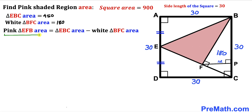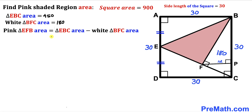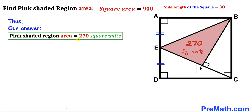Here's our final step. We already found the area of triangle EBC is 450 and the area of white triangle BFC is 180. So the area of pink triangle EFB equals 450 minus 180, which gives us 270. Thus the pink shaded area turns out to be 270 square units. Thanks for watching, and please don't forget to subscribe to my channel for more exciting videos!